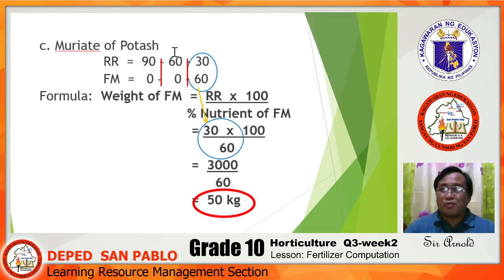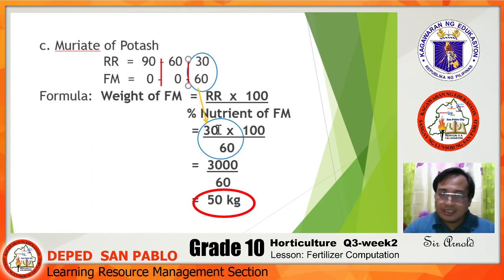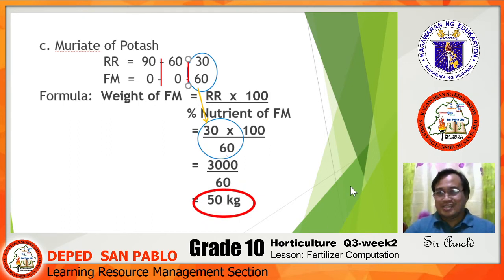The third and last fertilizer in Example 1 is muriate of potash (0-0-60). The last column to compute uses an RR of 30 and an FM nutrient of 60. So: 30 times 100 equals 3,000, divided by 60, giving us 50 kilograms. That completes the first example.